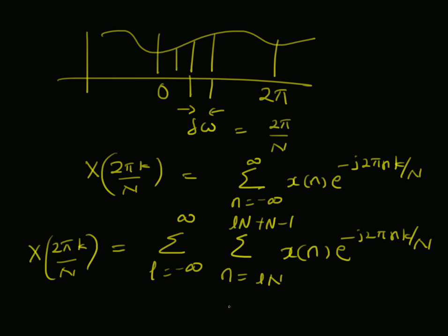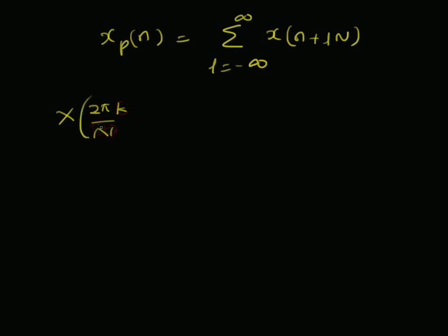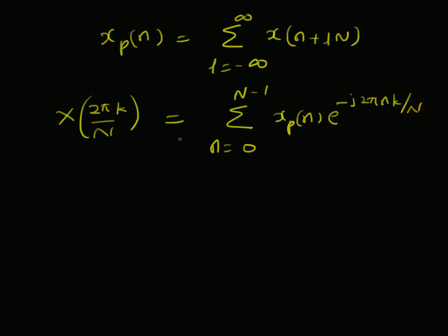By simply changing the variable n to m + lN, we can rewrite this summation. We define x_p(n) as Σ from l = −∞ to +∞ of x(n + lN). Then the sampled version of the DTFT, X(2πk/N), equals Σ from n = 0 to N−1 of x_p(n) e^(−j2πnk/N).